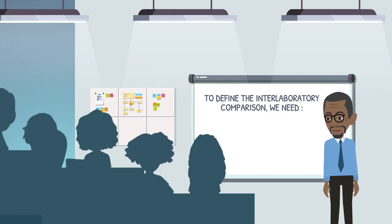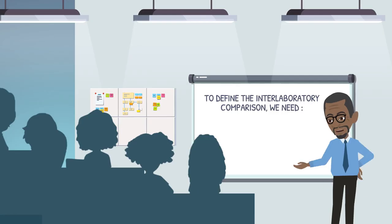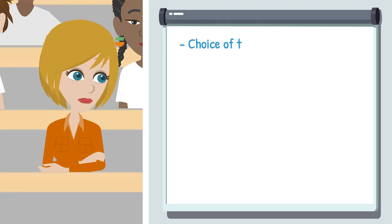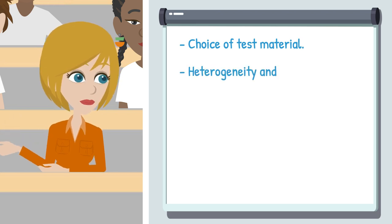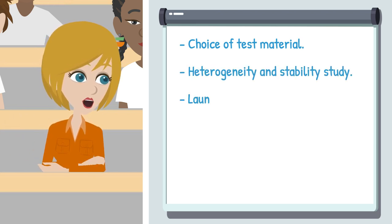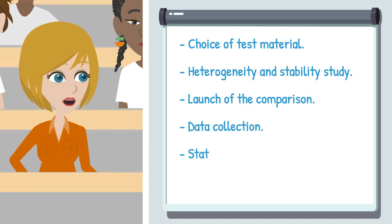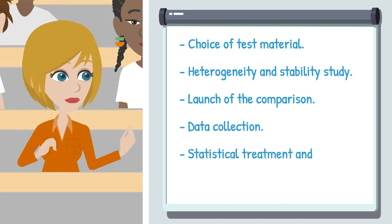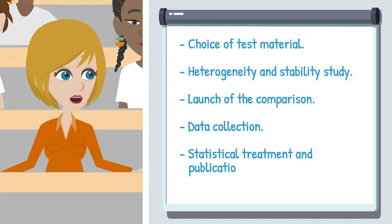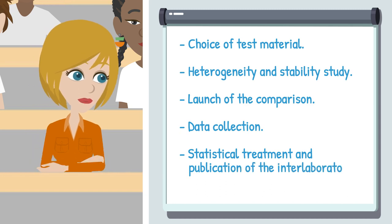First, we need to define the interlaboratory comparison, its purpose, and its measurands. We then select the material and study its heterogeneity and stability. Next, we physically organize the comparison. The following step is to assess the data collected on a probabilistic model basis. And finally, we deliver a report to the participants.